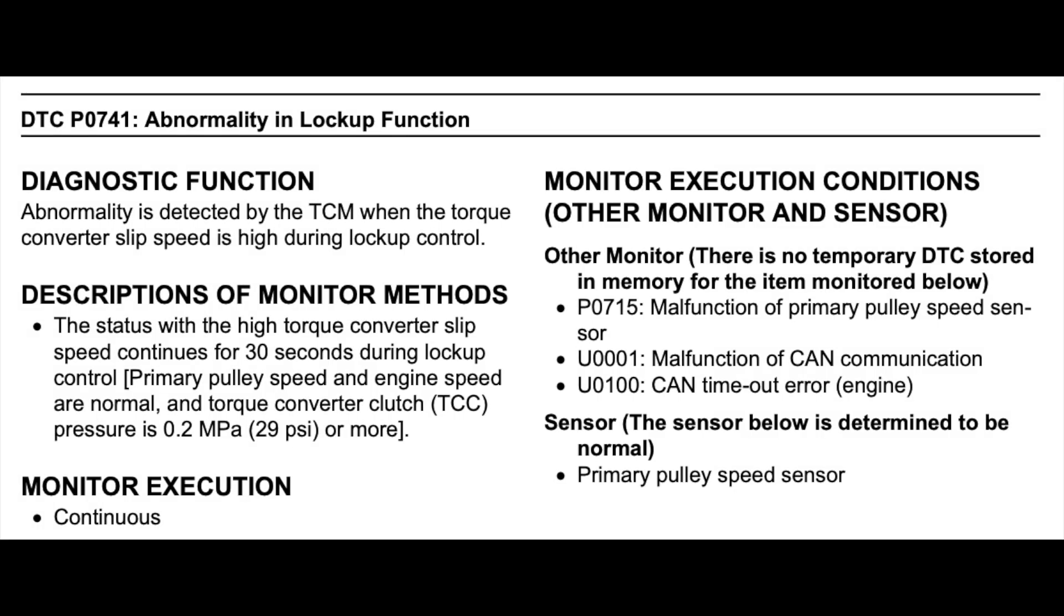And finally, this is wholly speculation on my part, but the stoplight switch data is likely used by the transmission control module to determine when to release the torque converter lockup, as the torque converter needs to be unlocked before the vehicle comes to a full stop, otherwise the vehicle will stall.